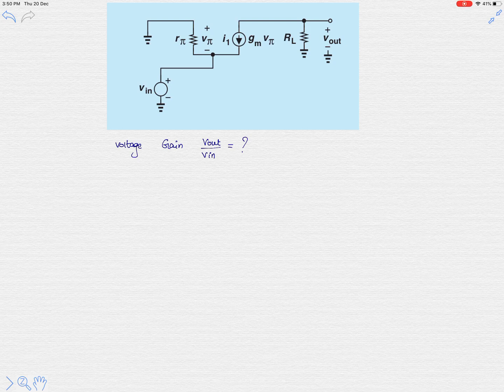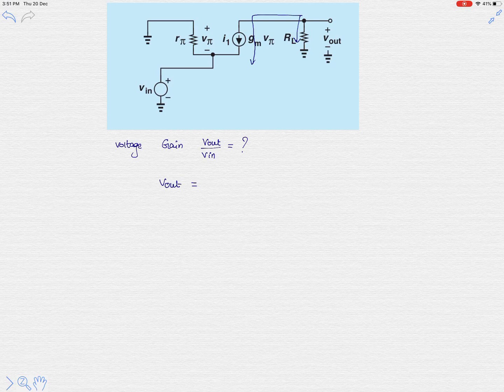So here simply let's write what is V output. The output voltage is, see simply this gm v pi current is flowing through the load resistance RL.